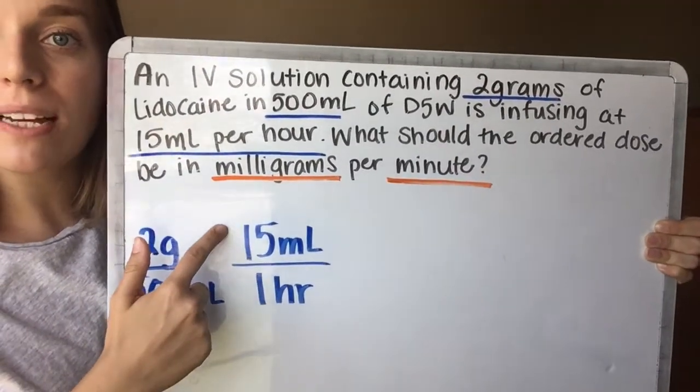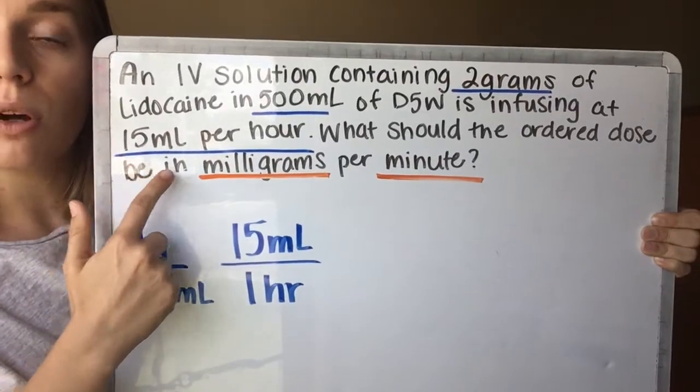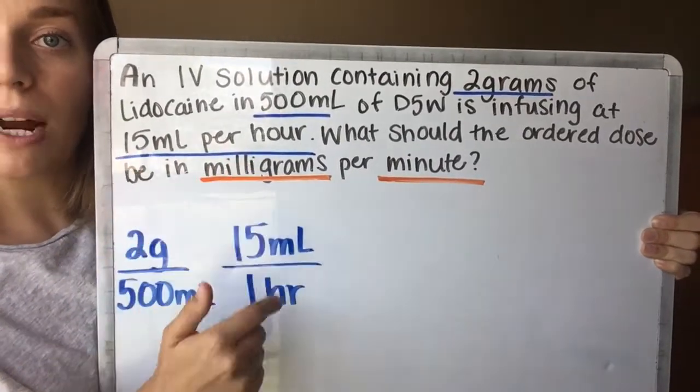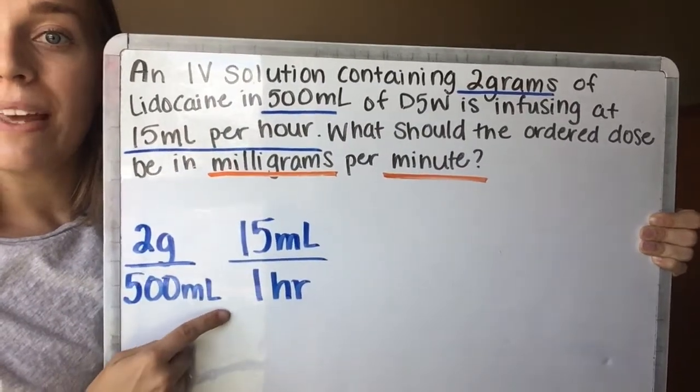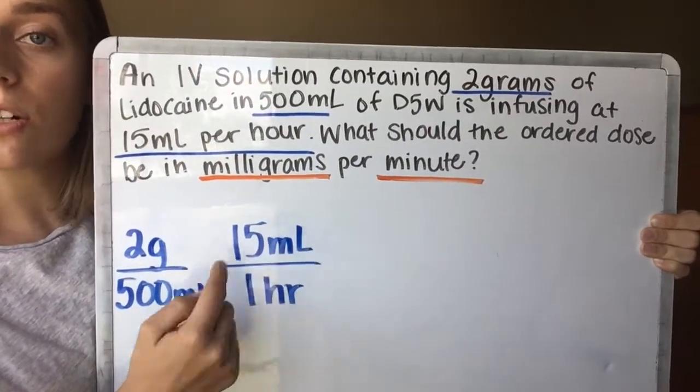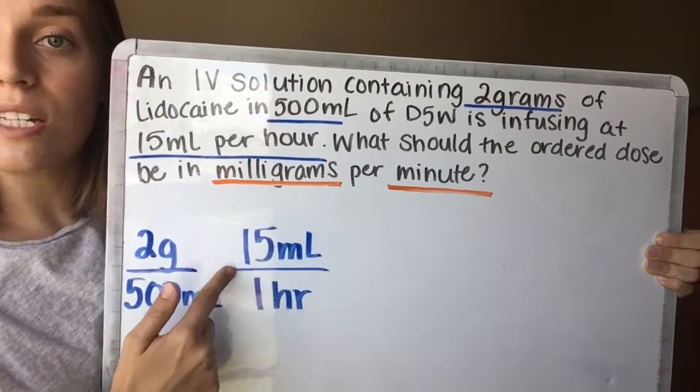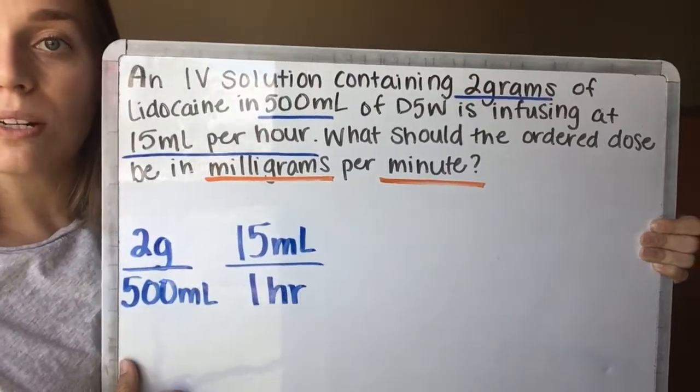Next, we're given that the flow rate is 15 milliliters per hour, so I'm writing that in as well. And I already love what I'm seeing here—it's milliliters and milliliters there on the opposite side, so we know they're going to cancel out when we start multiplying.